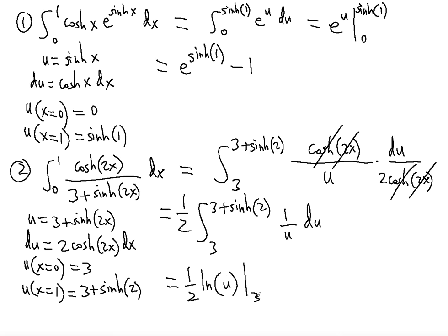Integrated from 3 to 3 plus sinh 2, that will give us one half ln of 3 plus sinh 2 minus one half of ln 3.